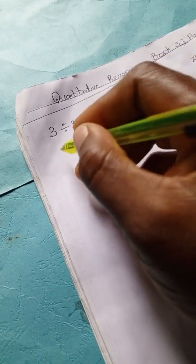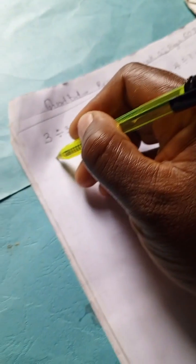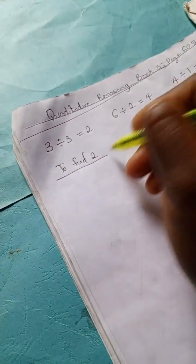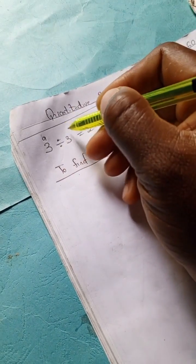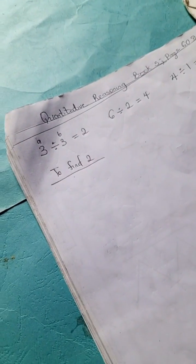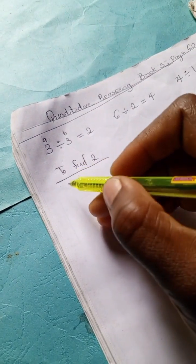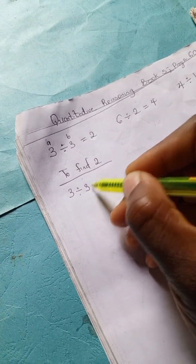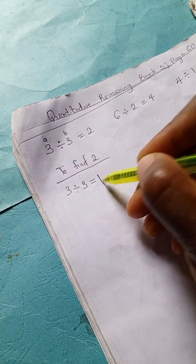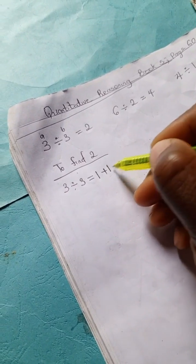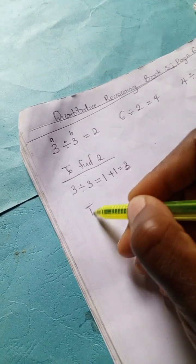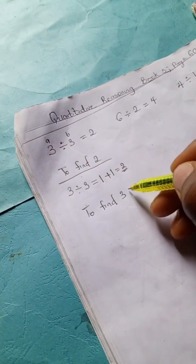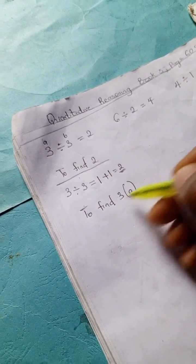So we're going to find what was done here. To find 2, but before then, let's label this a and b just to differentiate the numbers. So I have 3 divided by 3 equals 1, right, 1 plus our imaginary 1 is 2.